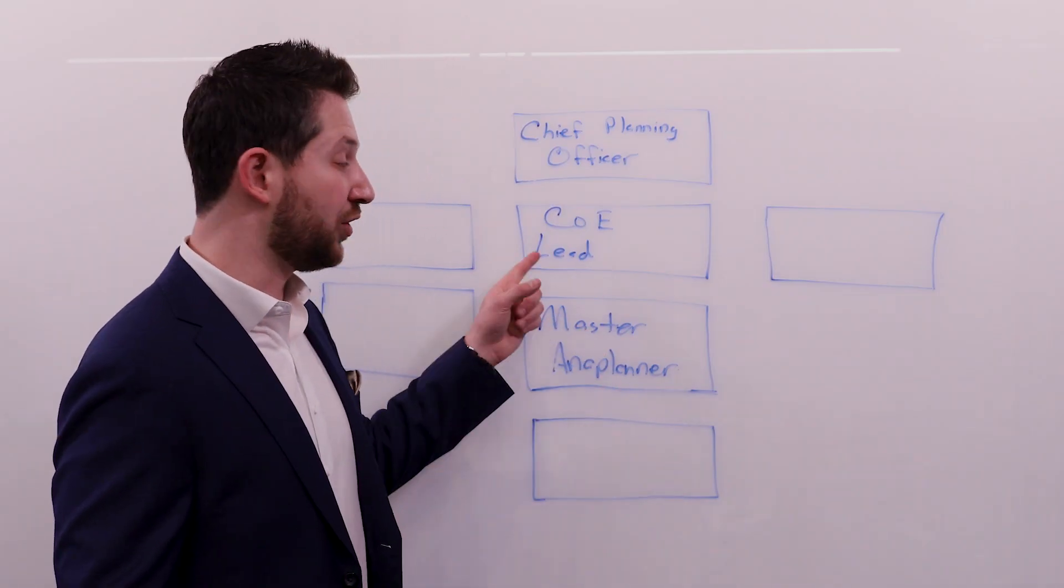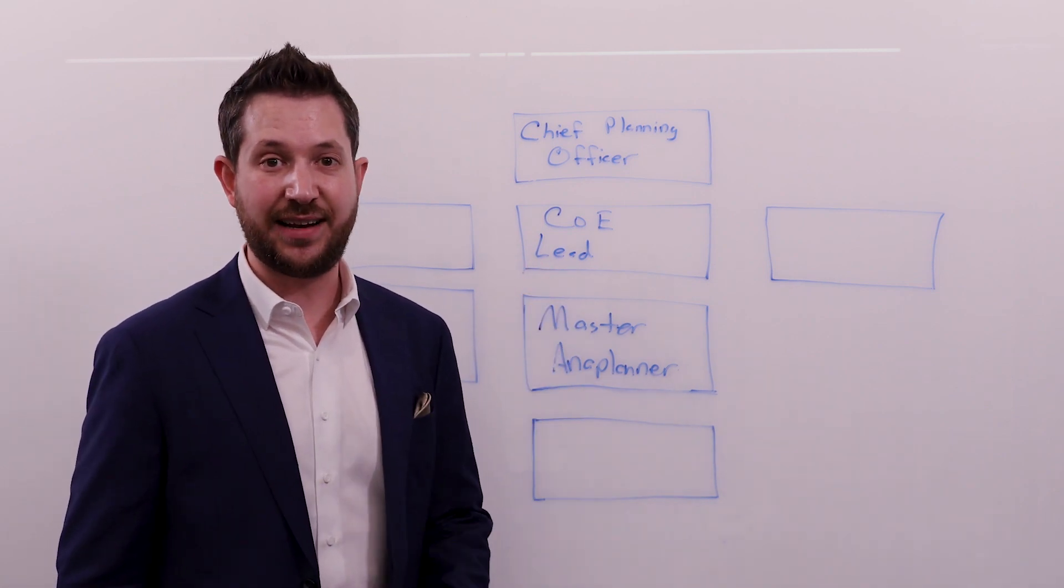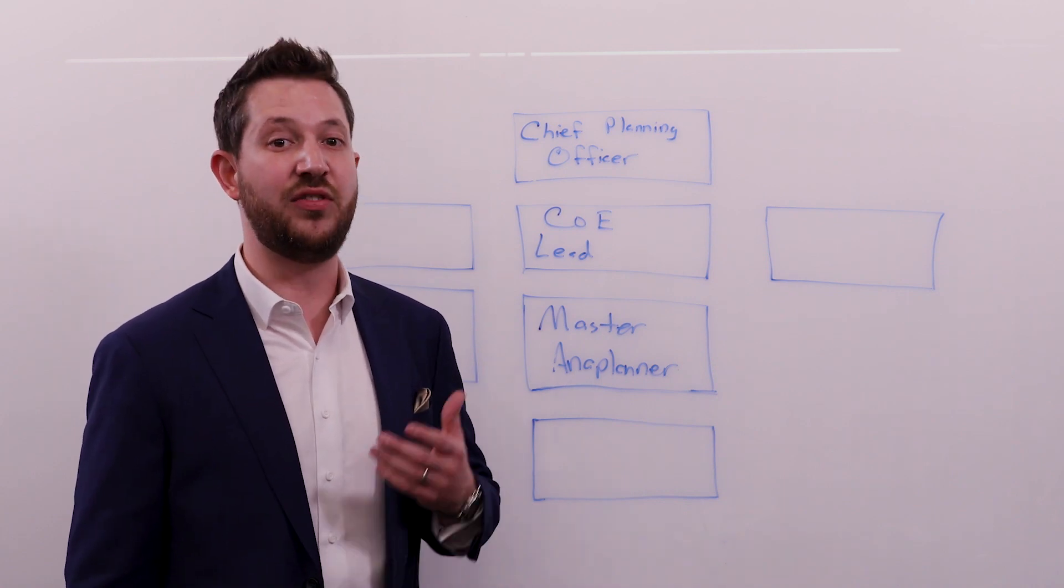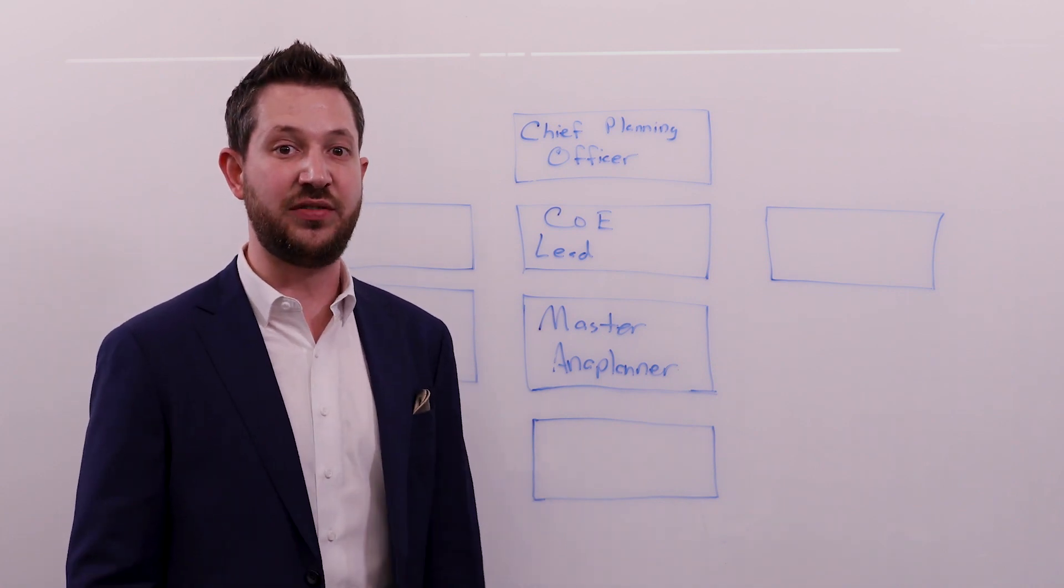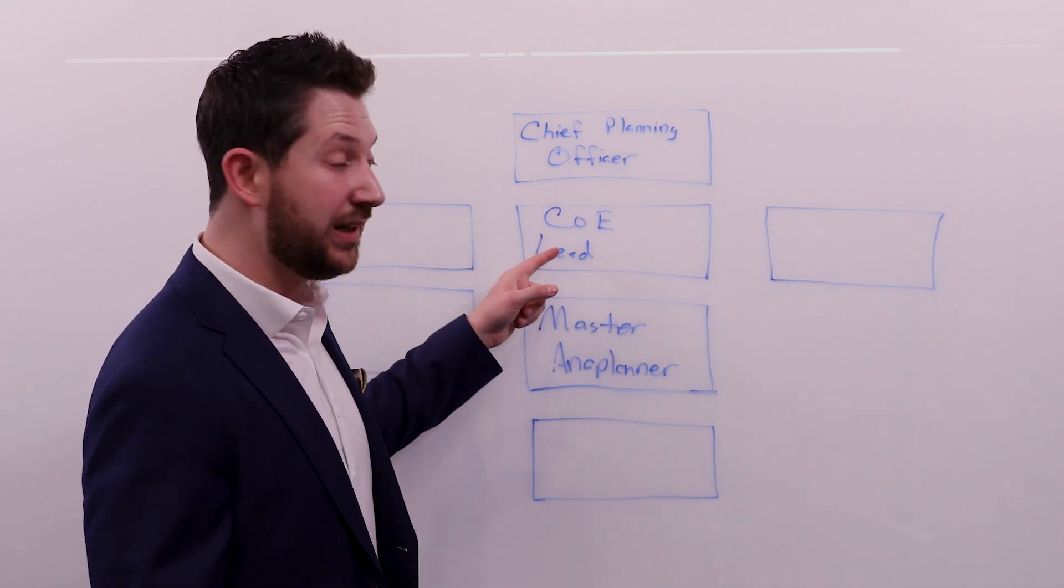Next up, we have the center of excellence lead. So the center of excellence lead is really just that. It's a team member who's focused on the success of the COE, making sure that it's achieving its core mission and making sure that everybody's getting stuff done. So the COE lead reports to the Chief Planning Officer and then is tasked with carrying out kind of the execution arm of that